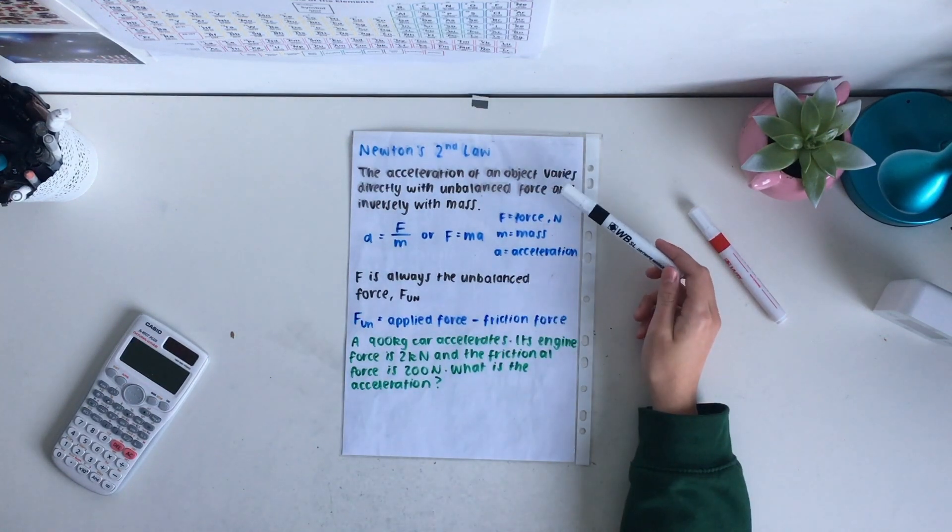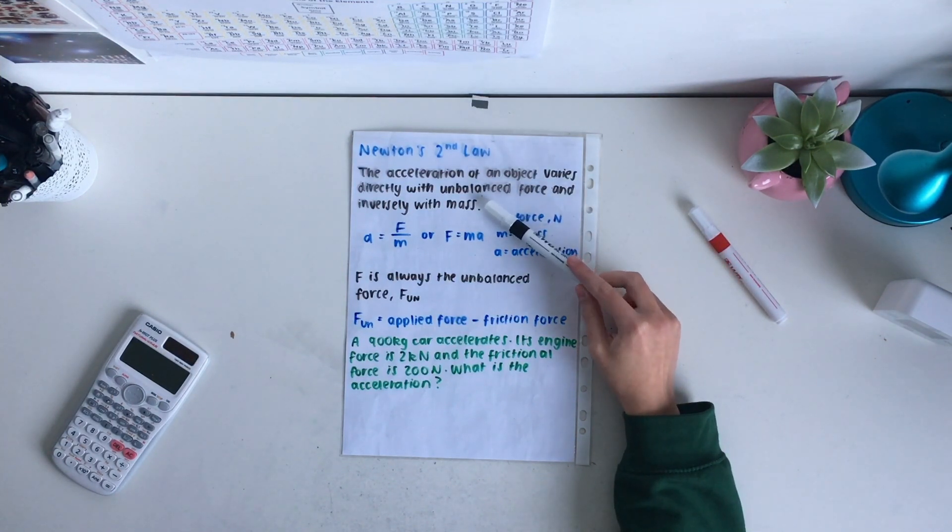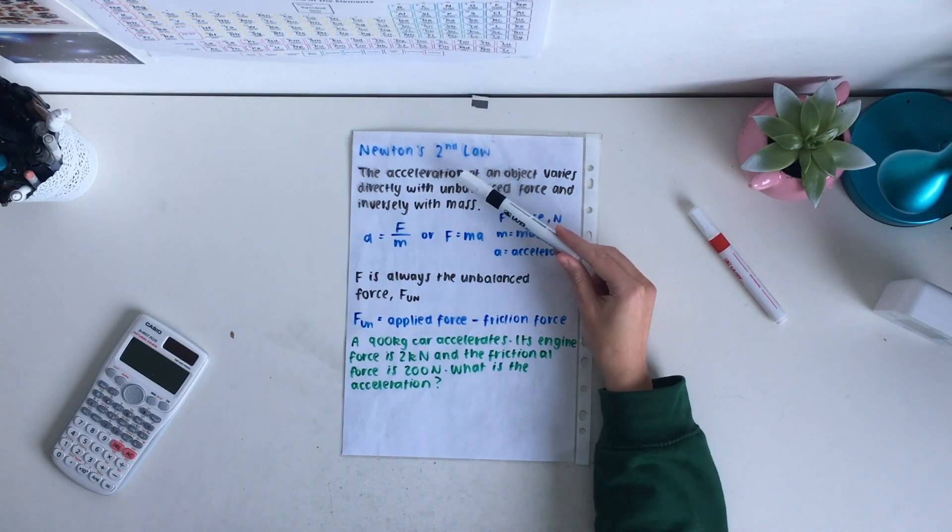Newton's second law says that the acceleration of an object varies directly with unbalanced force and inversely with mass. This means that increasing unbalanced force increases acceleration and increasing mass decreases acceleration.